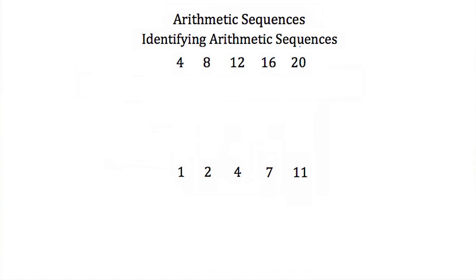So if we look at our first sequence here: 4, 8, 12, 16, and 20. To go from 4 to our second term 8, we would have to add 4. Now to go from our second term to our third term, or 8 to 12, again we would have to add 4. From 12 to 16 we would also have to add 4, and from 16 to 20 we would also have to add 4.